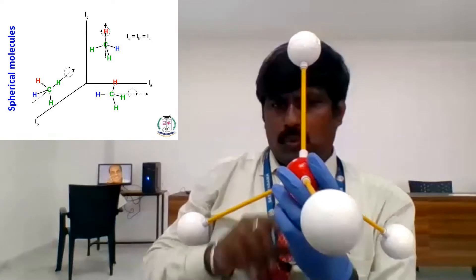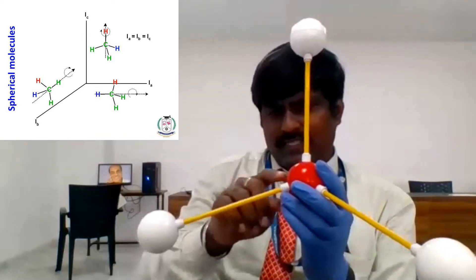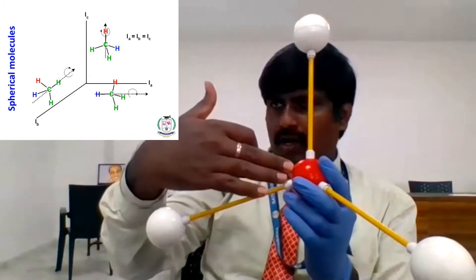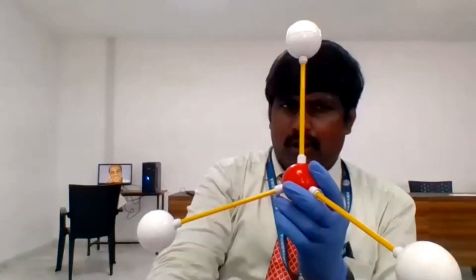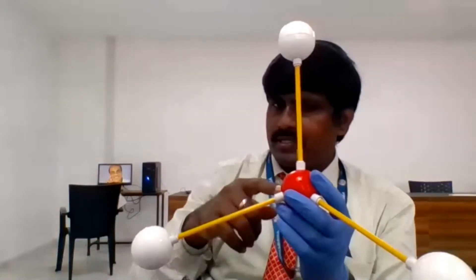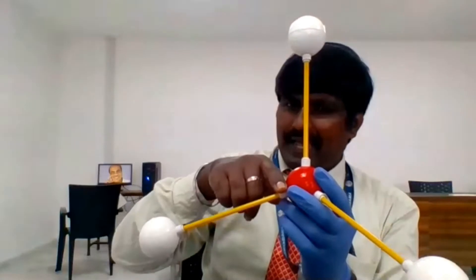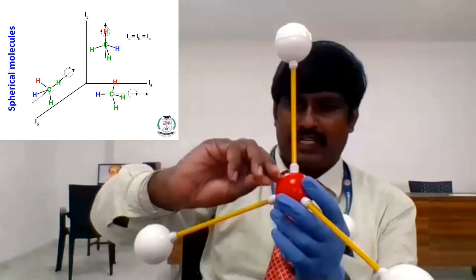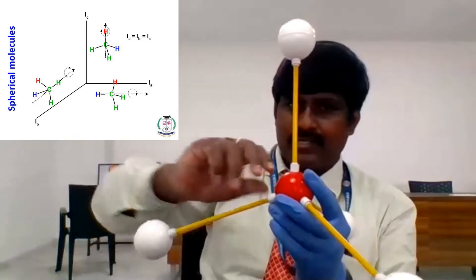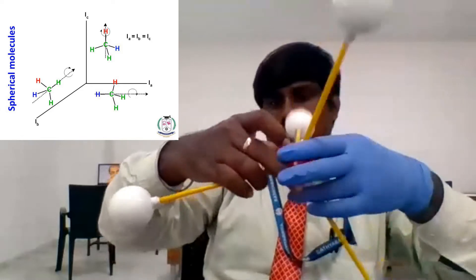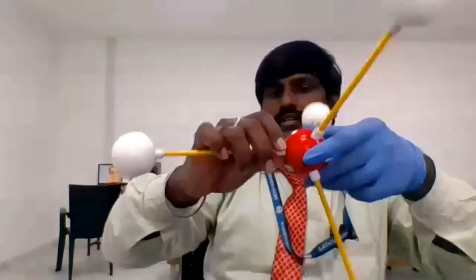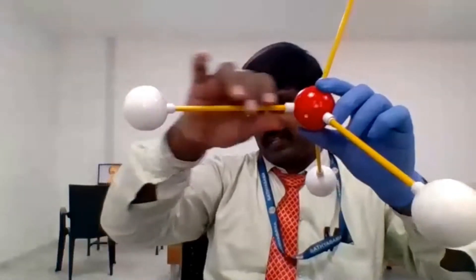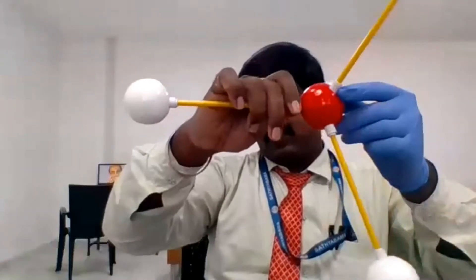What happens to the x-axis? Through either plane or axis, it has moment of inertia that is i-a. The moment of inertia through this axis — if I am rotating the molecule through this axis, it is i-a.